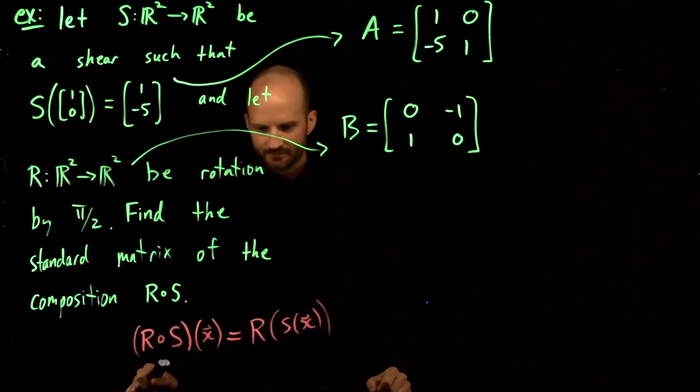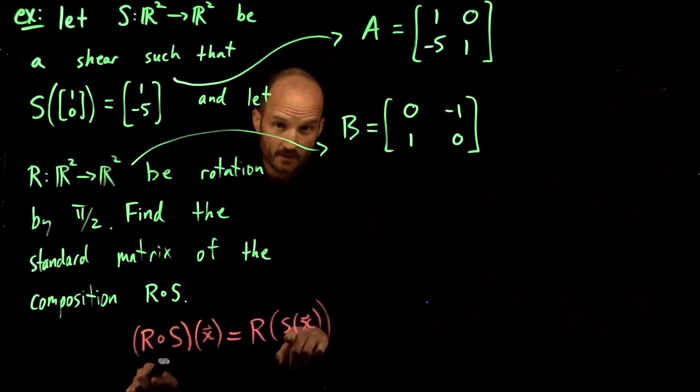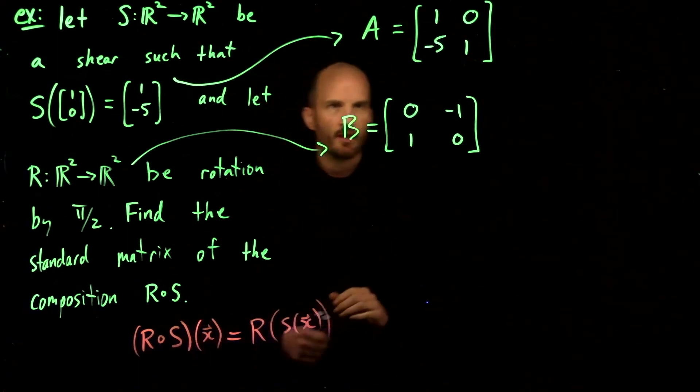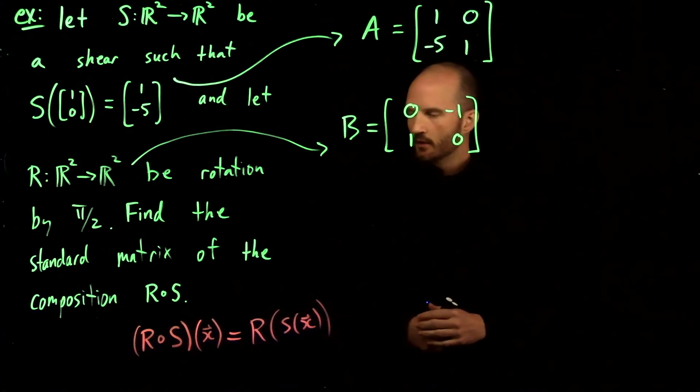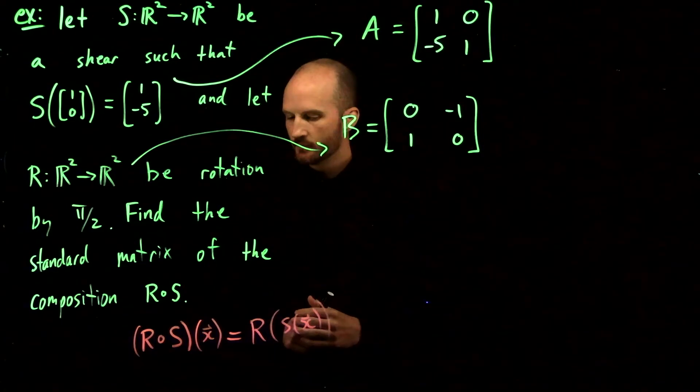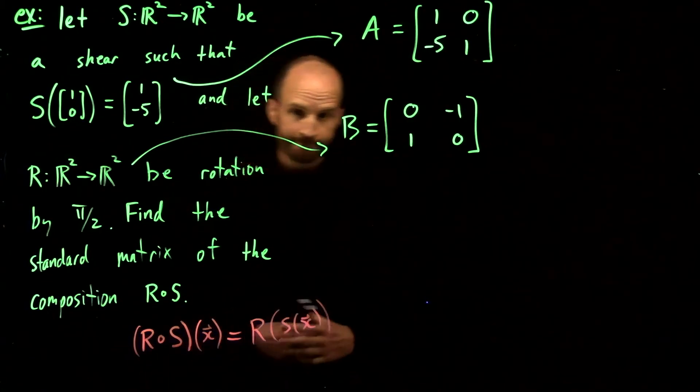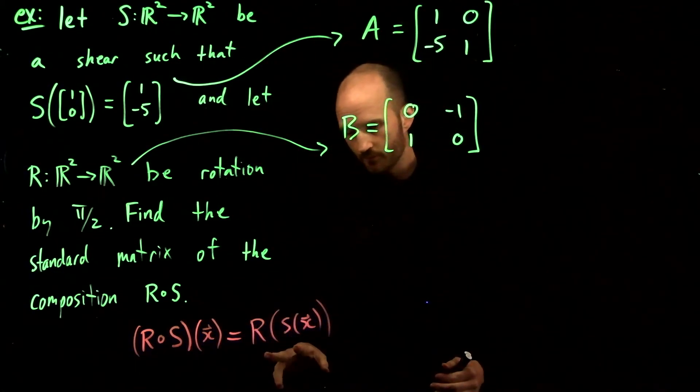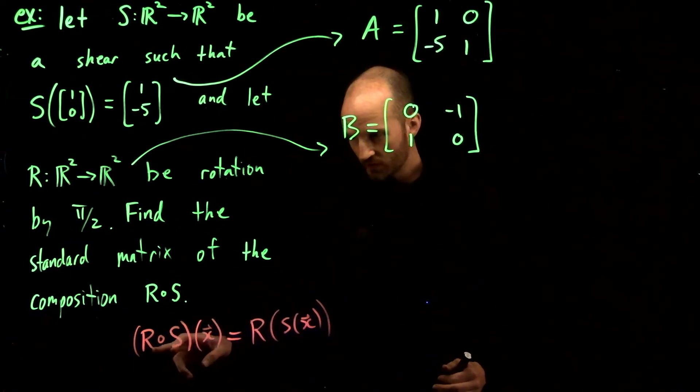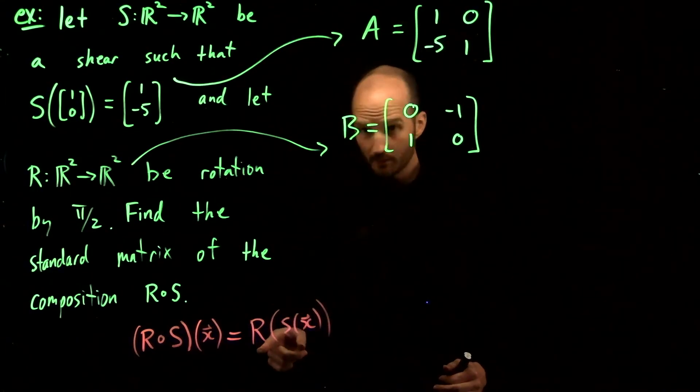But here, S actually comes first. S is the first transformation to hit x. Remember that. I'm going to use matrix multiplication to find the standard matrix for this transformation. The composed transformation should first do S—apply S to x, then apply R.